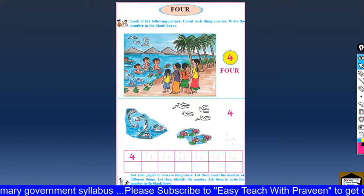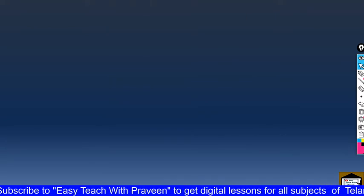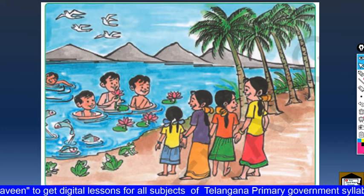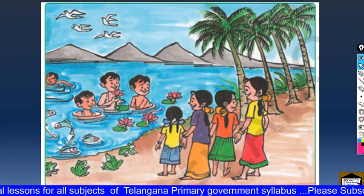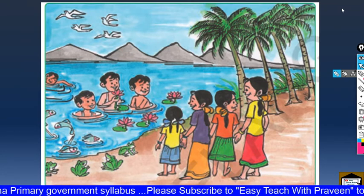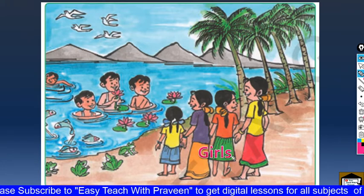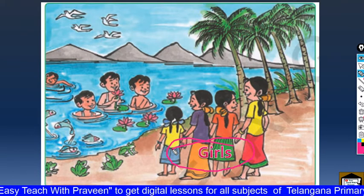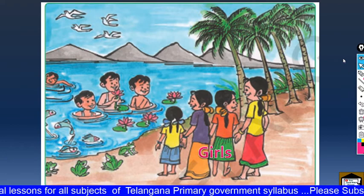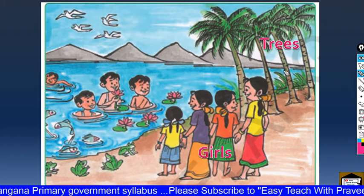Now, page number 21 please. We are watching a picture here. Do you observe the picture? Let us enter into the picture. What are the things we are having in this picture? What do you see? Say one by one. Very good — these are girls. And next, what do you observe? Trees. Okay, these are the trees.